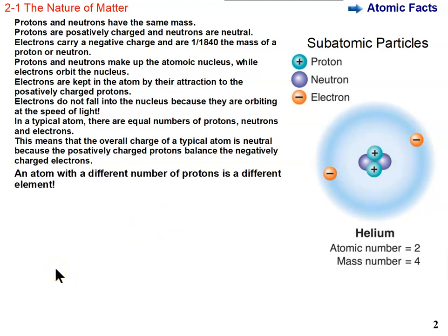You need to keep straight what happens to an atom when we change the number of subatomic particles. A different number of protons makes that atom a different element. If you change the number of protons, you have changed the atom into a different element. For example, if this helium had one less proton, we'd be looking at hydrogen. If it had one more proton, we'd be looking at lithium.